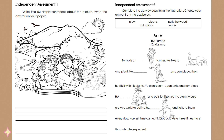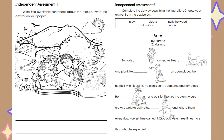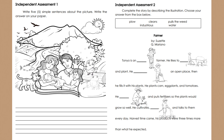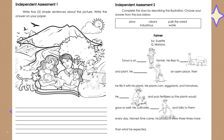For independent assessment 1, write 5 simple sentences about the picture. Write the answer on your paper. Take a closer look at the picture, tell something about it, and write 5 simple sentences about the things that you see in the picture.